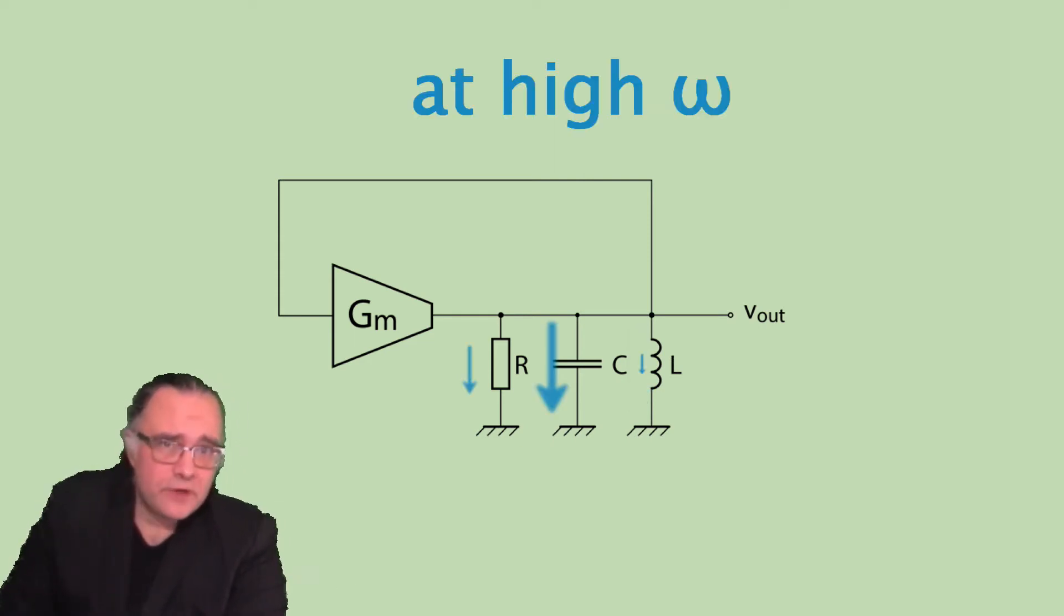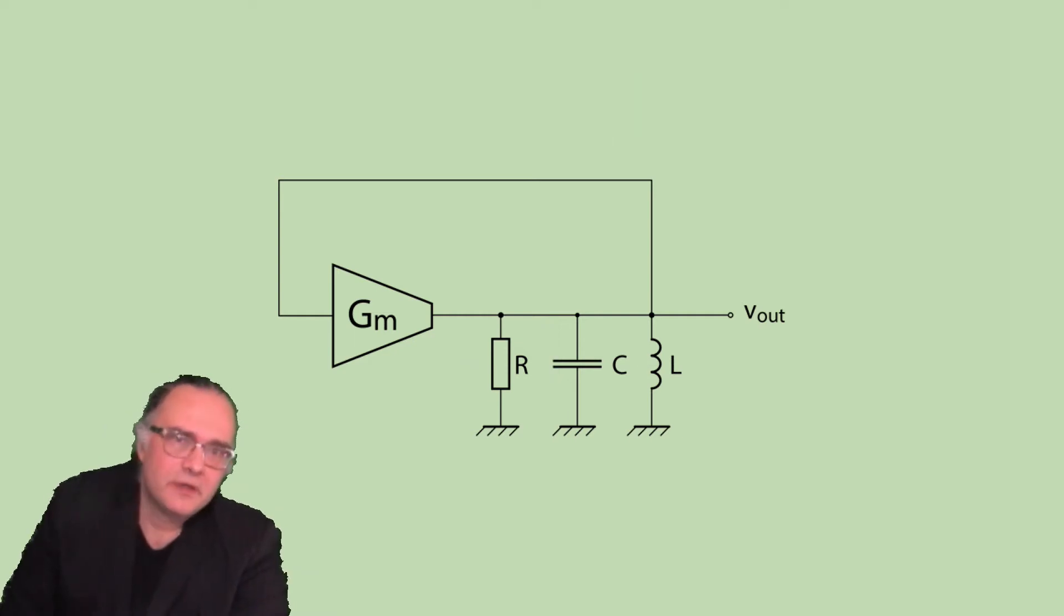For very high frequencies again the impedance node at Vout will be very low because the capacitor will pull the impedance level down to ground.